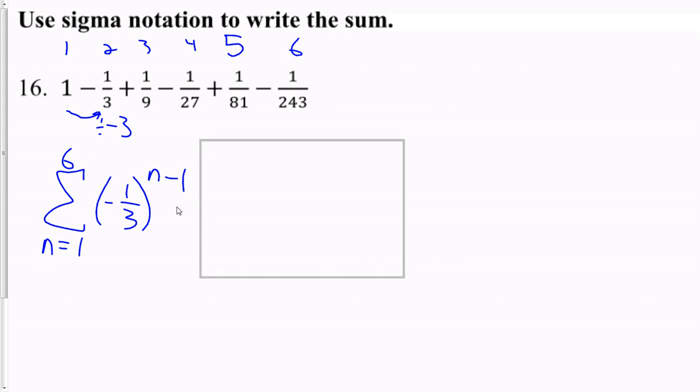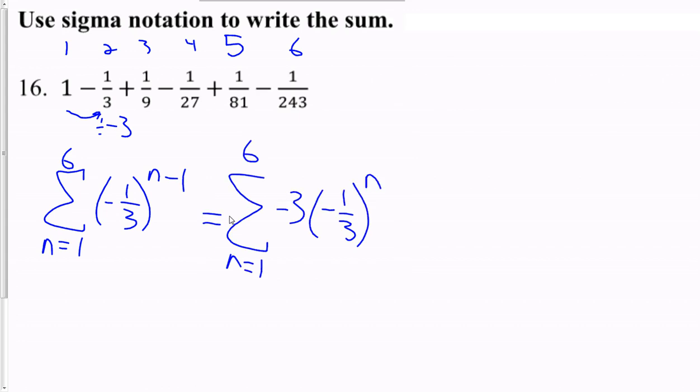Now, some people prefer to write it without the minus 1. And so, how they would do that is they would go one term further, if we're going the other way, times 3, times negative 3, times negative 3, and we'd be at negative 3. So, you could say negative 3 times negative 1 third to the n. I personally prefer this way. This is typically the way I'm going to do it on my answer keys.